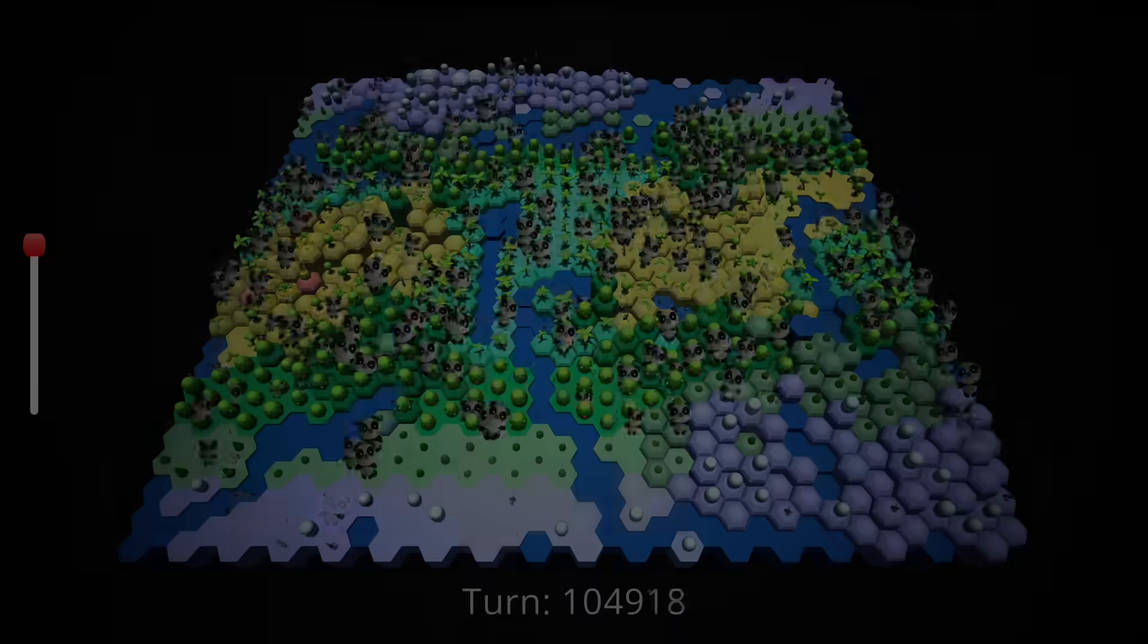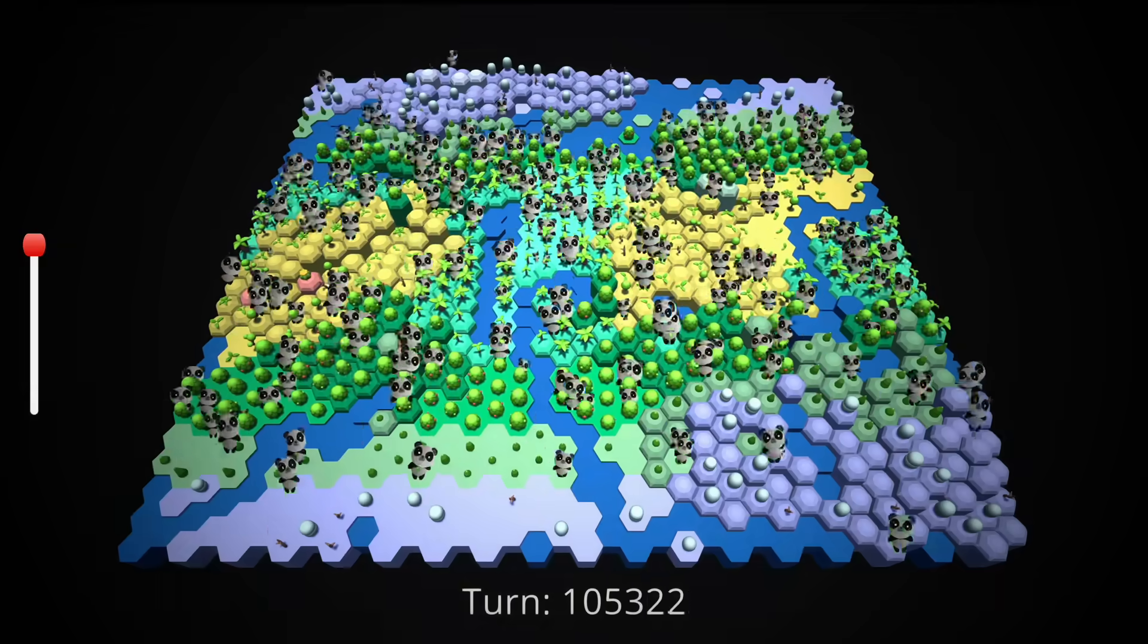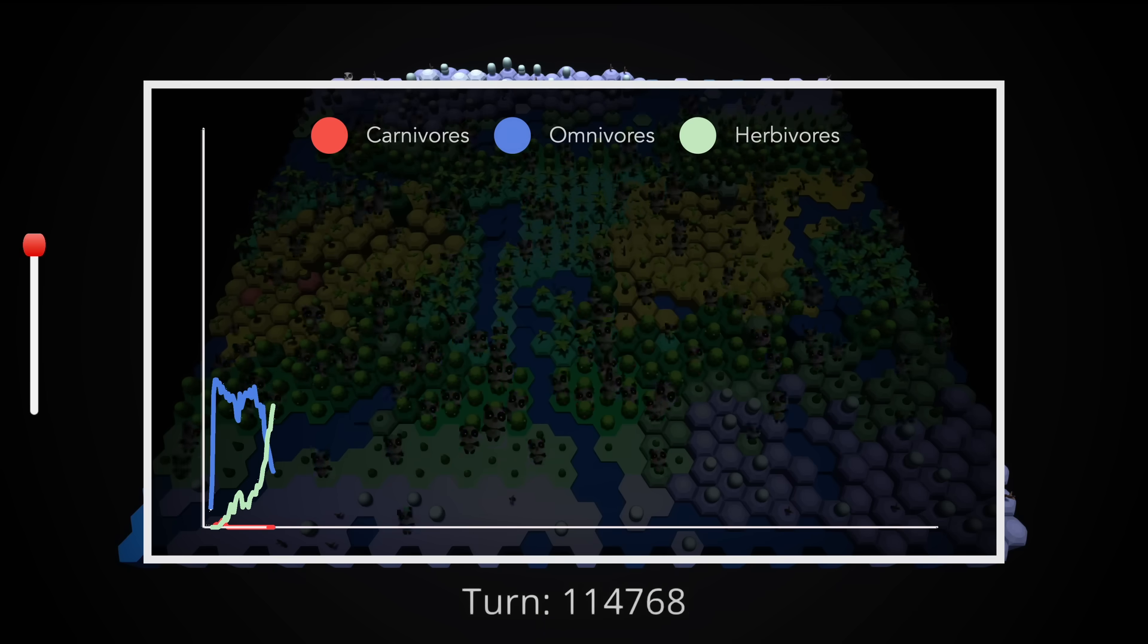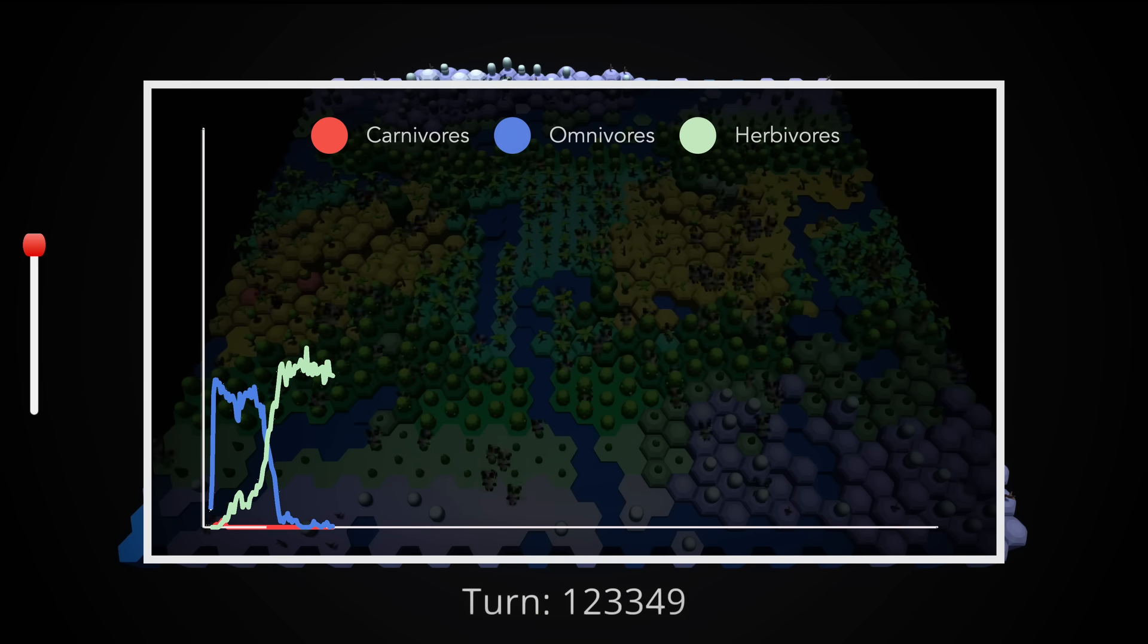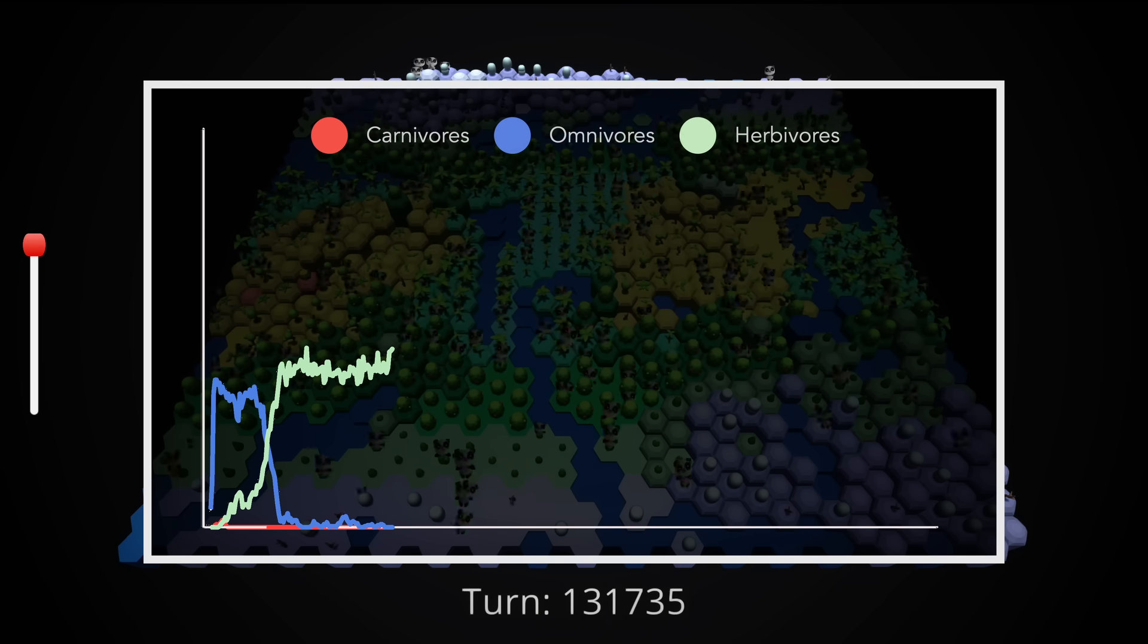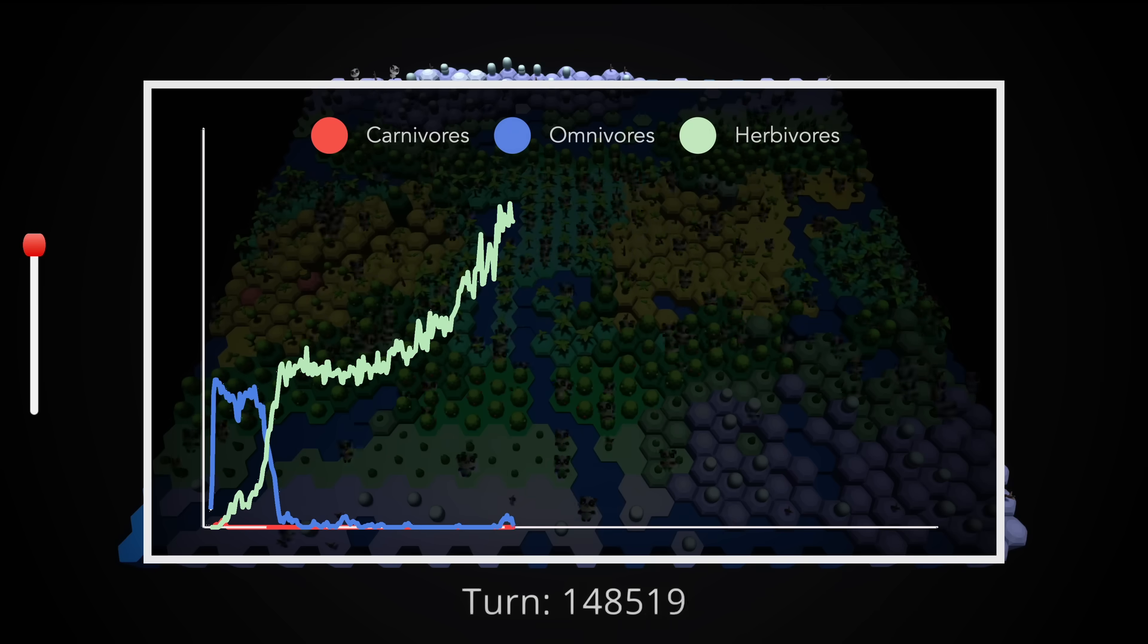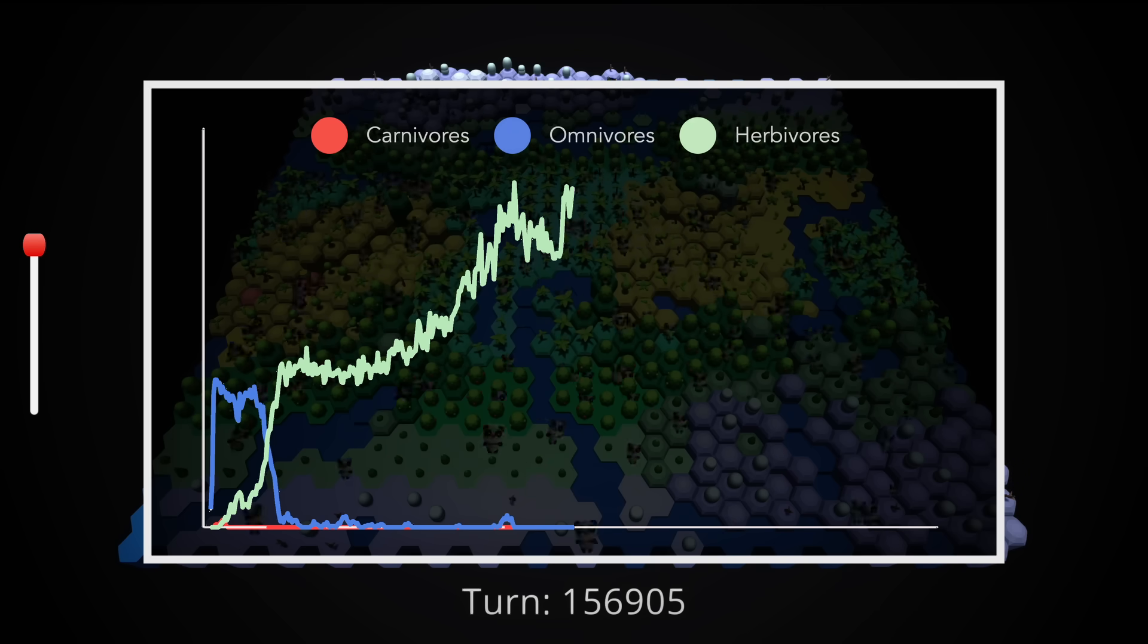One thing we should always bear in mind is that an environment is not just the world we put a creature in. It includes the creature itself. When we started, we essentially had a box that was full of untouched fruit and veg. Now we have a box that's full of partially eaten fruit and veg, and an untapped population of defenseless walking meatbags. And this leads us to the most dramatic series of changes we'll see.